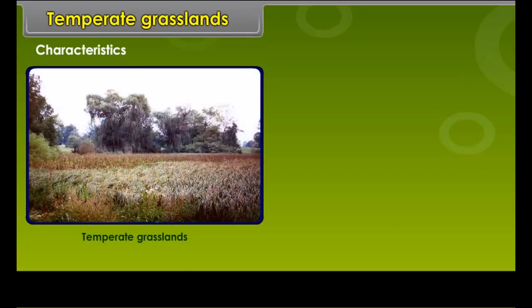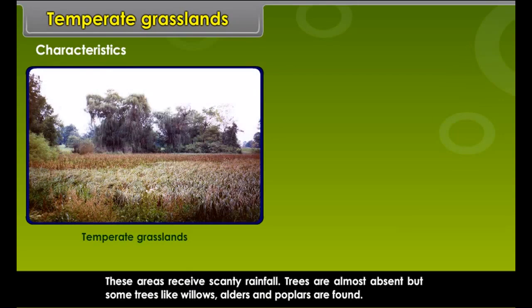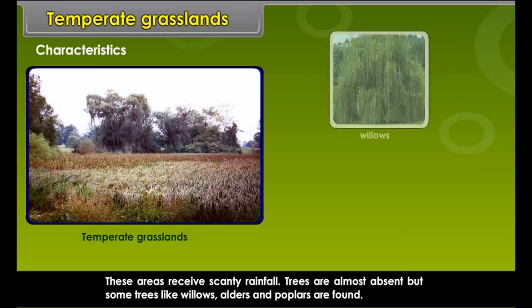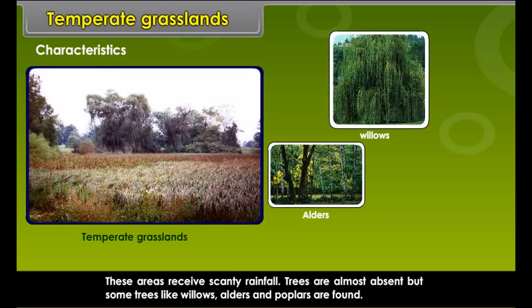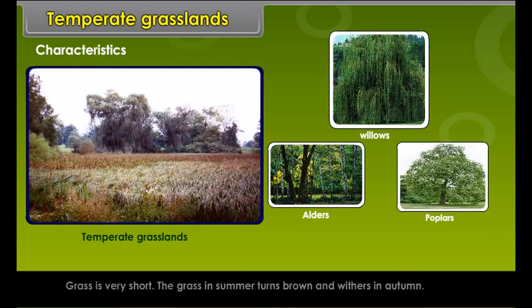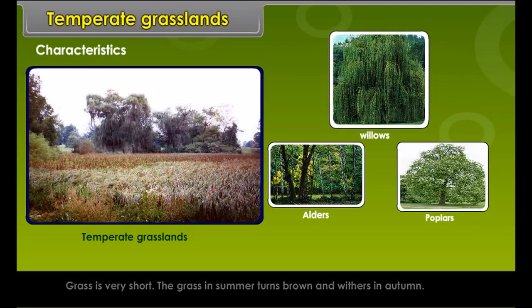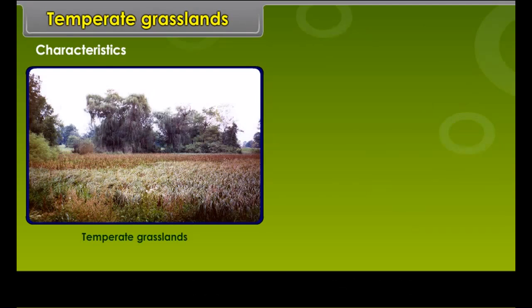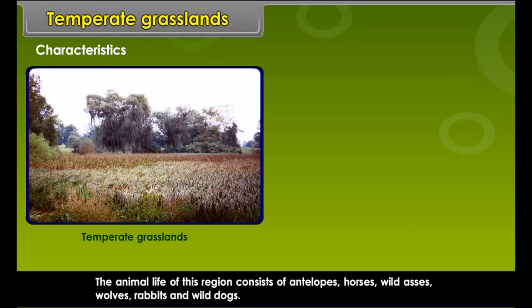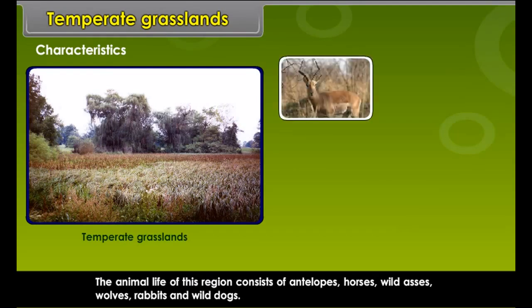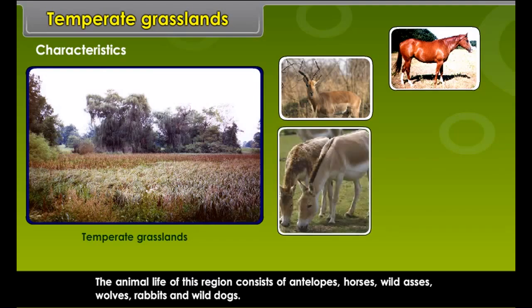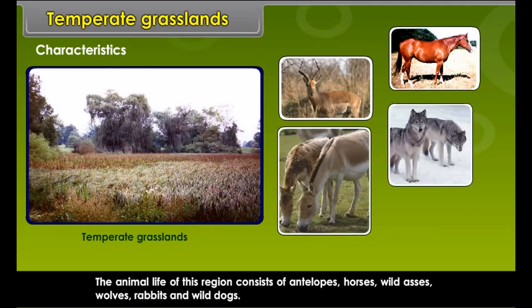Characteristics. These areas receive scanty rainfall. Trees are almost absent but some trees like willows, alders and poplars are found. Grass is very short. The grass in summer turns brown and withers in autumn. Cattle is reared in these grasslands. The animal life of this region consists of antelopes, horses, wild asses, wolves, rabbits and wild dogs.